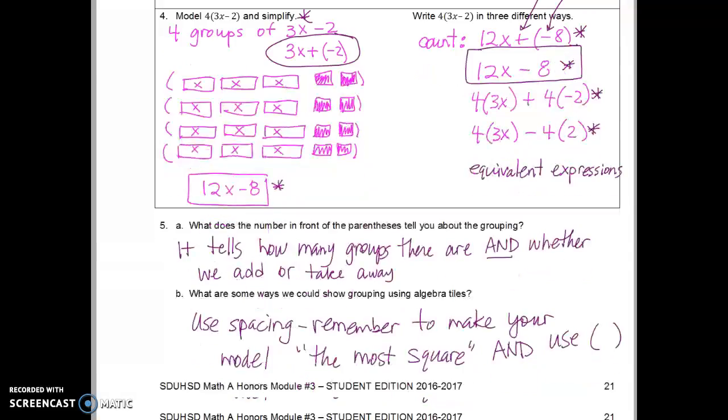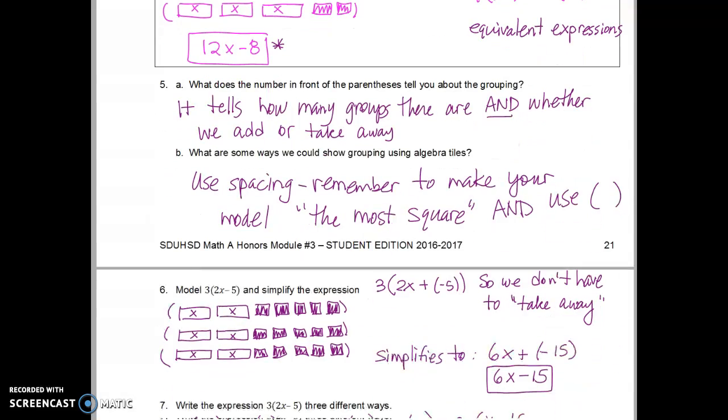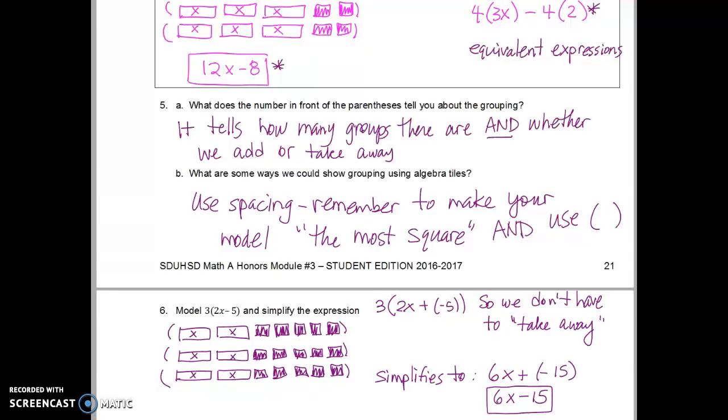Okay, on the next page, modeling this problem, 3 times 2x minus 5, again, we have parentheses around our model. We've made it the most square, which you'll notice the pattern is that you start with the x tiles, and you put the associated ones tiles next to them, and that will make your model the most square. And I'm going to draw the perimeter for you so you can see that. I also have parentheses around each group, and I don't want to take away five positive tiles by making five pairs of zero pairs. How many of you did that?